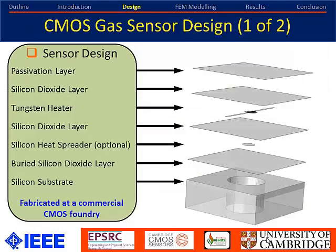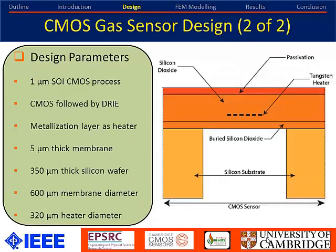Looking at the gas sensor design structure: we start off with an SOI wafer — at the bottom you have a silicon substrate, then the buried oxide layer on top, followed by the thin silicon layer. That sandwich forms your SOI wafer. We can use the silicon layer as a heat spreading layer or embed a temperature sensor in the form of a diode, which performs very well for reading temperature values. We then have the upper metallization layers, and we use tungsten to form the resistive heating element, covered by a passivation layer at the top — all done at a commercial CMOS foundry.